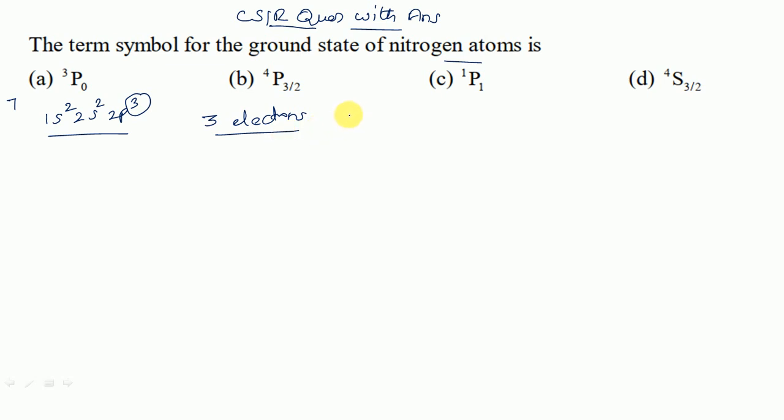So we can fill like this. 3 orbitals: 1, 2, 3. 3 unpaired electrons.